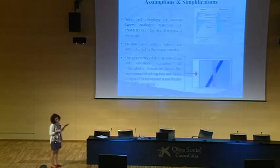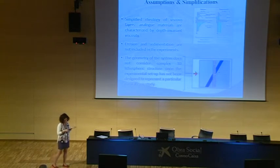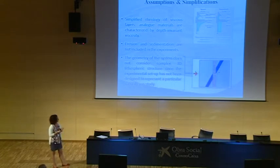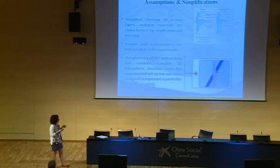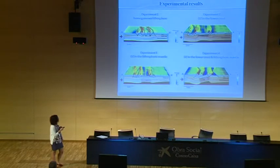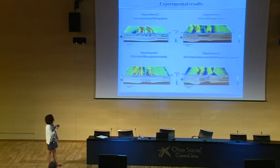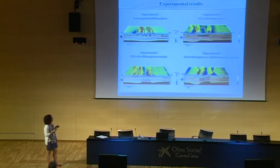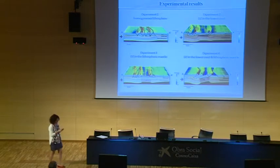Of course, we have simplifications in analog models: the rheology of viscous materials does not account for viscosity variation with temperature, surface processes were not included, and geometry was kept simple. With respect to a uniform lithosphere, deformation was distributed. As soon as we introduced the disturbance zone, deformation localized at the boundaries. The key result from this series is that both boundaries are activated, regardless of the vertical location of the strong block.